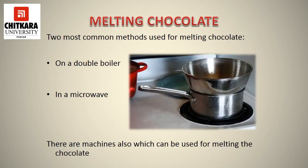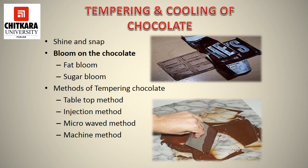Let's now discuss the melting of chocolate, or how we can melt chocolate. The two most common methods used for melting chocolate are: number one, on a double boiler, and number two, in a microwave. There are machines also which can be used for melting the chocolate. Now we will discuss tempering and the cooling of chocolate.